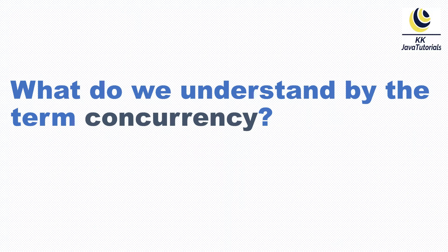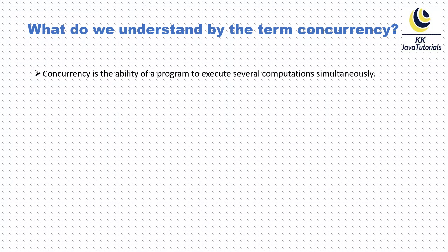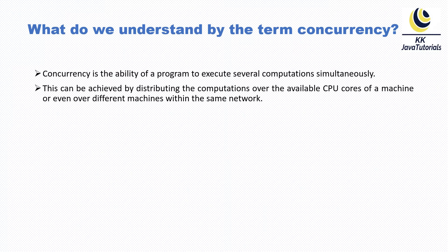In this video tutorial we'll understand what concurrency means and how we can achieve it. Concurrency is the ability of a program to execute several computations or tasks simultaneously. That's the correct definition of concurrency. This can be achieved by distributing the computations or tasks over the available CPU cores of a machine, or even over different machines within the same network, taking advantage of distributed computations.